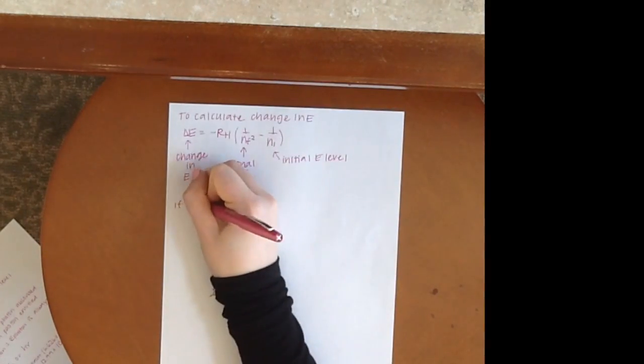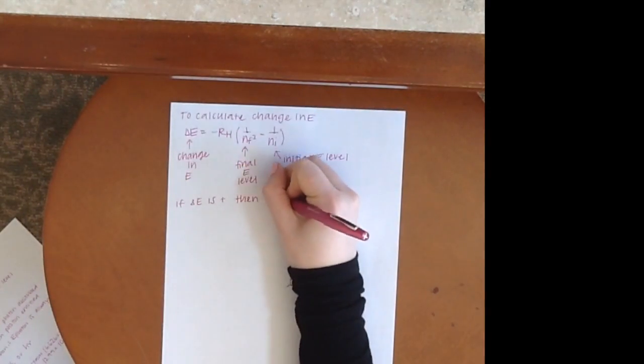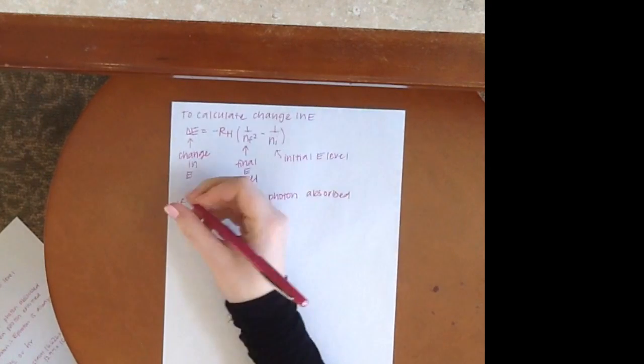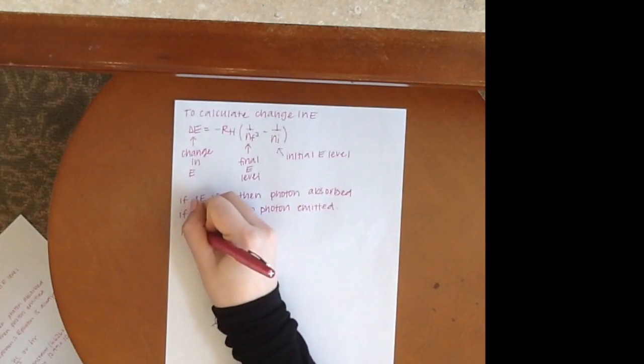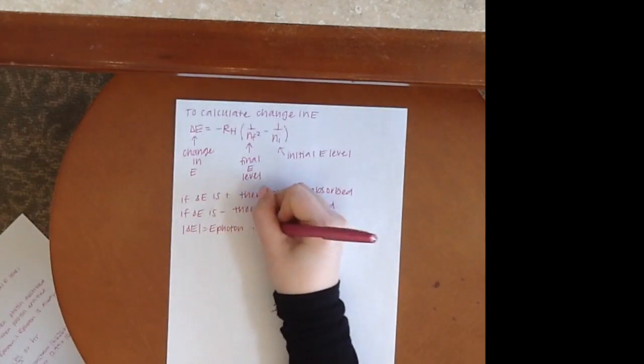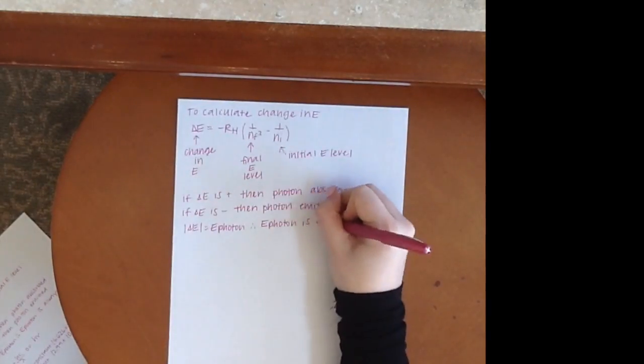If delta E is positive, then this means that a photon of light was absorbed. If delta E is negative, then this means that a photon of light was emitted. The absolute value of the change in E equals E photon. Therefore, E photon is always positive.